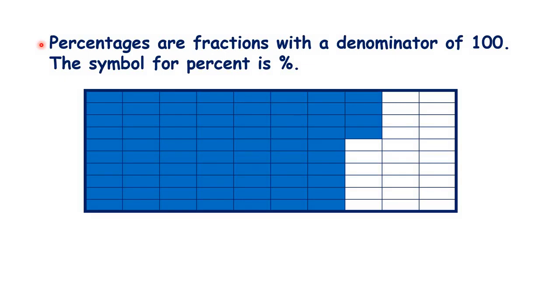Percentages are just fractions with a denominator of a hundred. So here, 74 hundredths of the large rectangle is shaded.